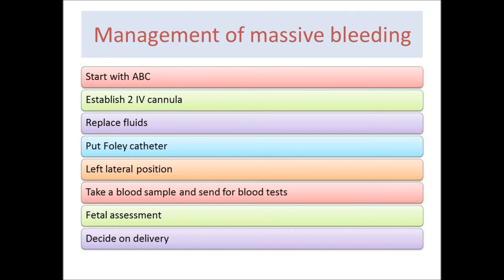We take a blood sample and send for investigations: cross-match, full blood count, platelet count, DIC screen, liver function tests, renal function tests, and Kleihauer-Betke test. We assess fetal condition with cardiotocography and ultrasound scan, then decide on delivery according to the clinical condition. This was a brief introduction to antepartum hemorrhage; the next video will be about placenta previa.